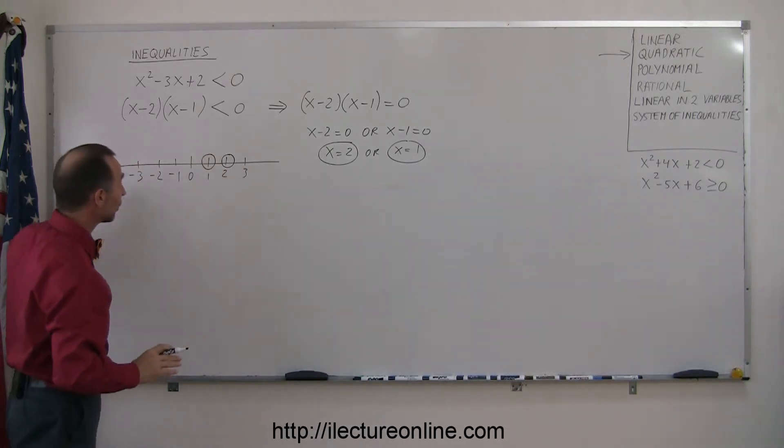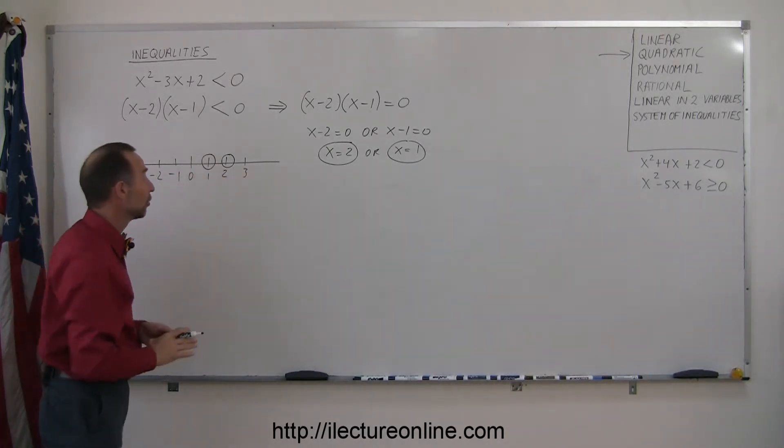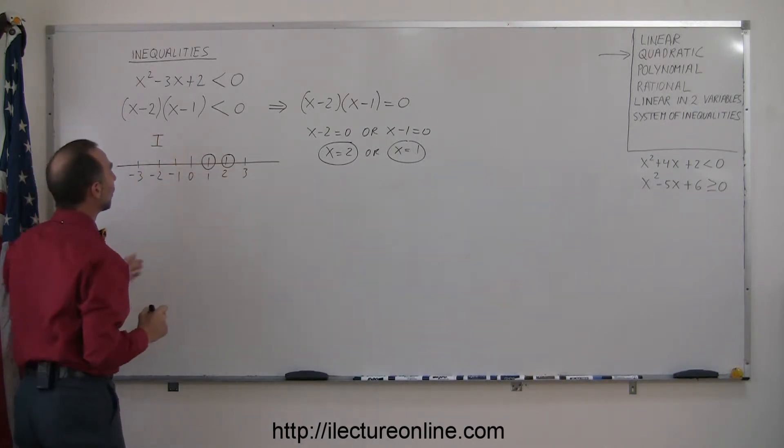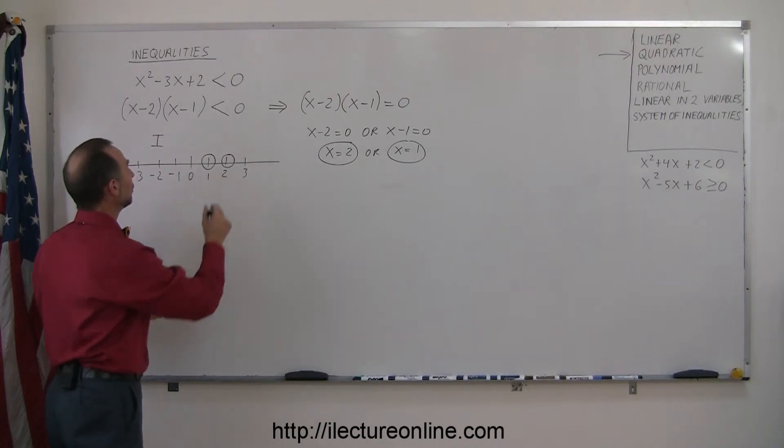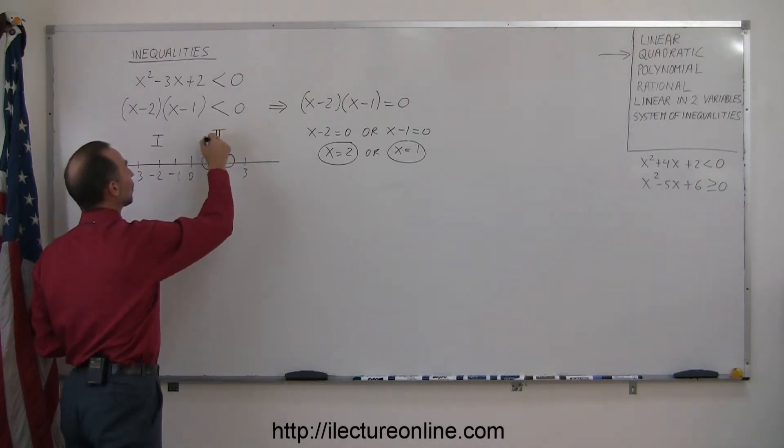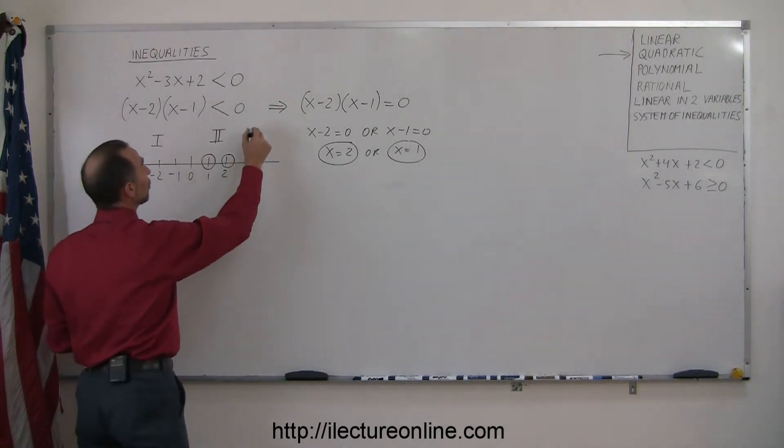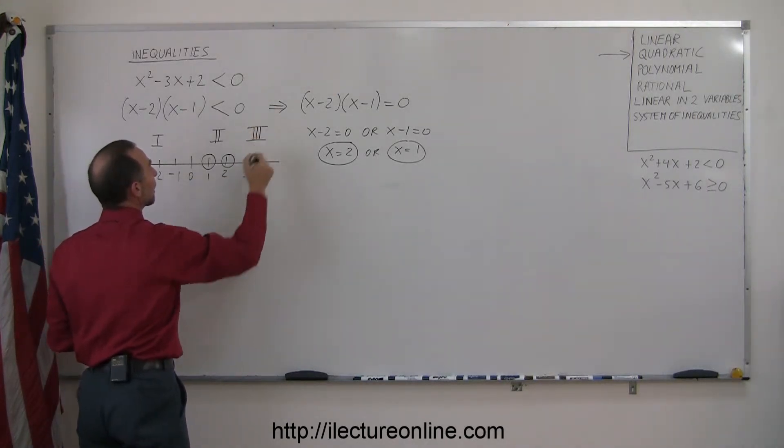And now notice that on the number line, we have three regions. We have a region to the left of number 1, so we label that as region 1. We have a region between 1 and 2, so we label that as region 2. And then we have a region to the right of the number 2, which is region 3.